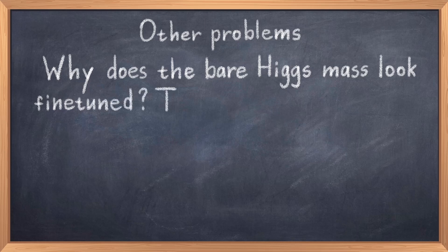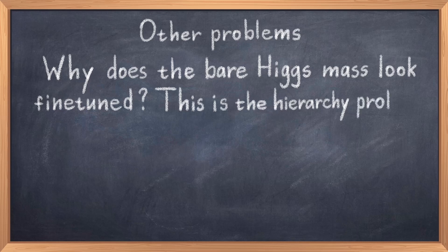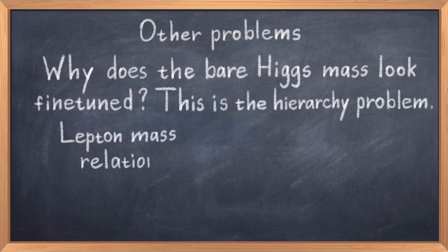There are also other questions, like why the 19 numerical parameters of the standard model are what they are. We would like some deeper theory to explain these numbers, or at least find some relation between them. This also leads us to some strange relations of the standard model.